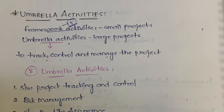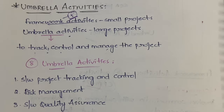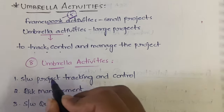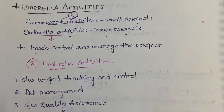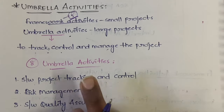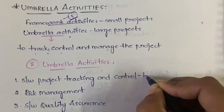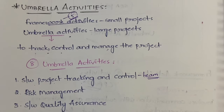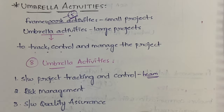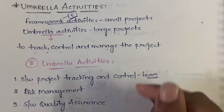Let's go in depth about each and every umbrella activity. The first one is software project tracking and control. Here, a software team will assess the progress against the plan and take necessary action in order to maintain the schedule.